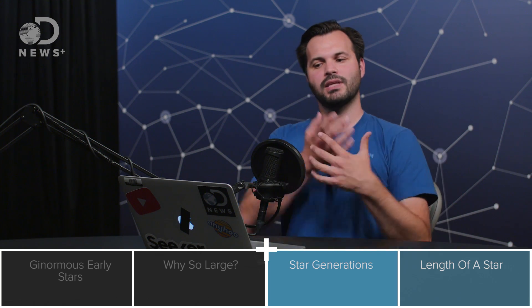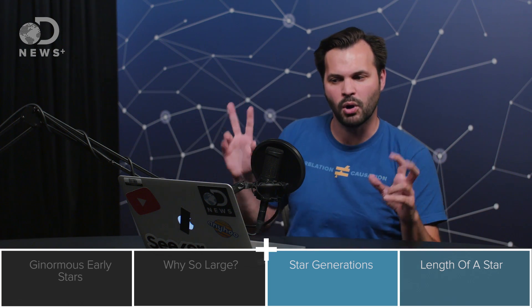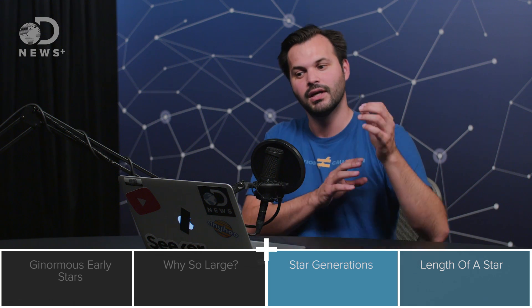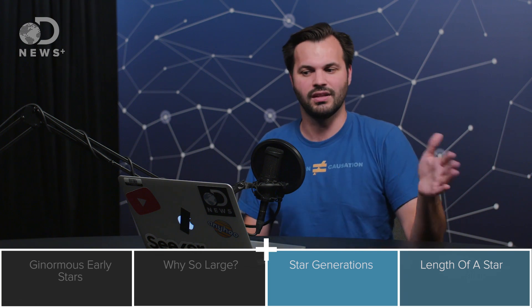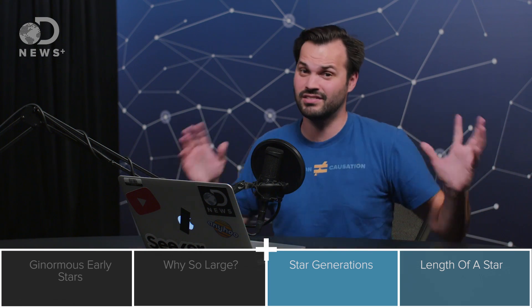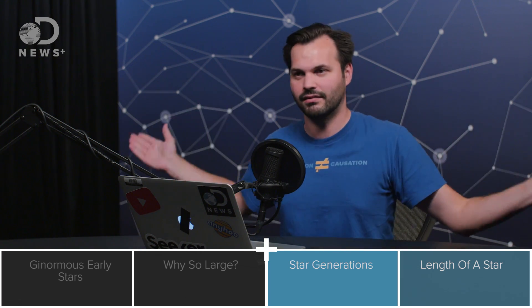But today we've got population two stars. They've got some metal in them. They're still known as metal poor. Then there's population one stars. They've got a lot of metal in them. They're younger. They've only formed in the last million to a hundred million years, which in the age of the universe is kind of insane, that we are seeing some of these very new stars. They're basically freaking babies.